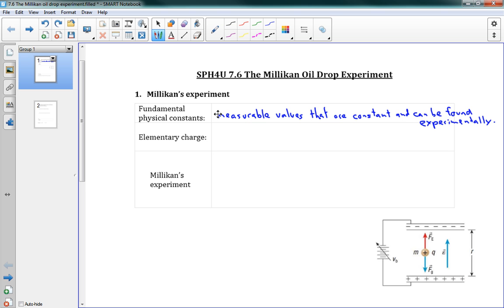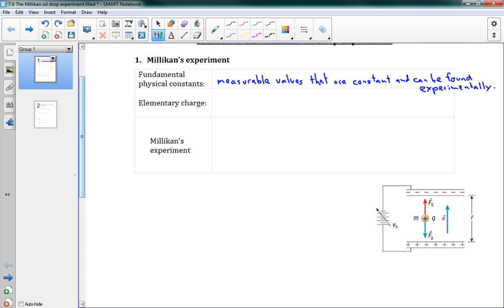And when Millikan came around in 1909, he said, well, I think there is a fundamental physical constant that is called the elementary charge, the minimum possible charge that something can have. So Millikan believed in an elementary charge, and we call it E, that is the smallest unit of charge.